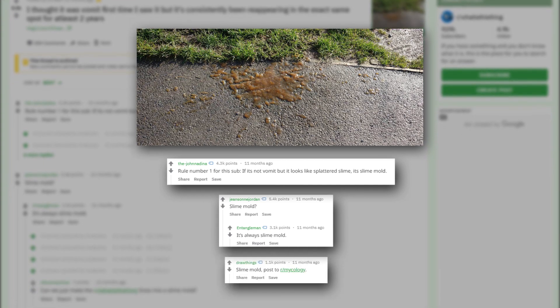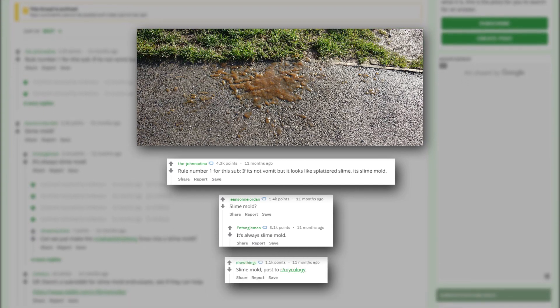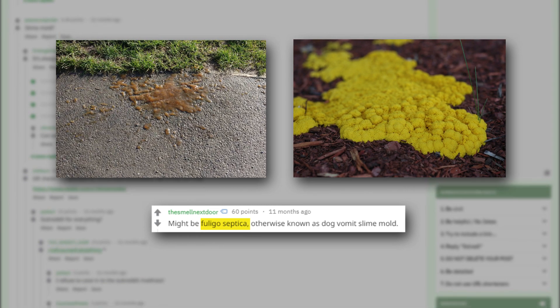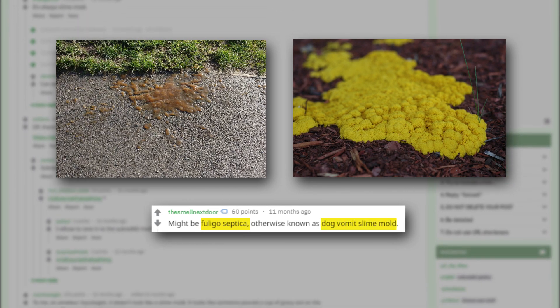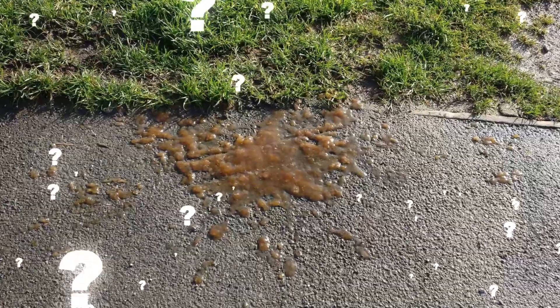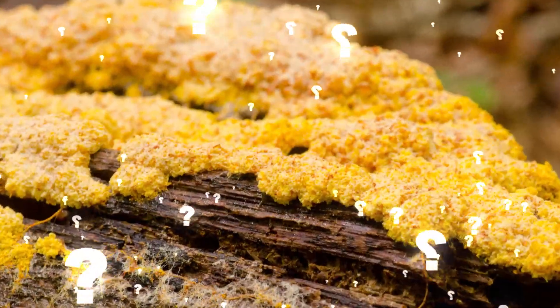In fact, most people hypothesized in the comments that the blob was a variety of slime mold, specifically the Fuligo septica, or dog's vomit slime mold, an apt name given its appearance. So what if it is slime mold? How can we tell? And more importantly, what the heck is slime mold anyway?